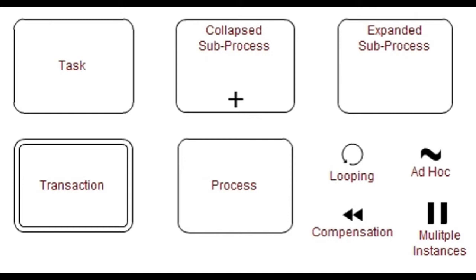An activity is represented with a rounded corner rectangle and describes the kind of work which must be done. A task represents a single unit of work that is not or cannot be broken down to a further level of business process detail. A subprocess is used to hide or reveal additional levels of business process detail. A transaction is a form of subprocess in which all contained activities must be treated as a whole.